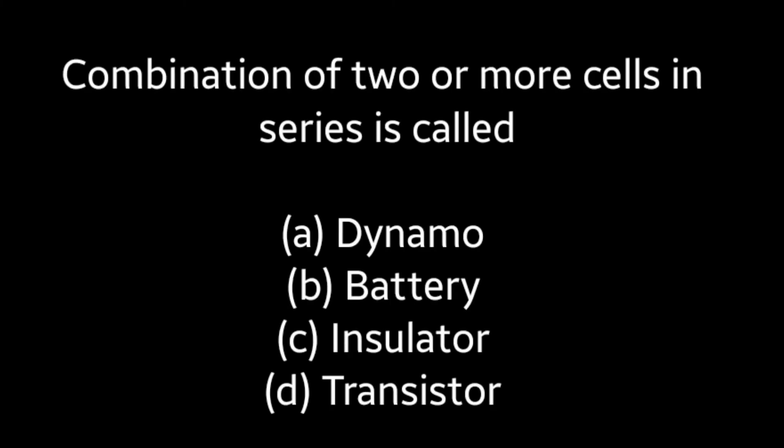Next question: Combination of two or more cells in series is called (A) Dynamo, (B) Battery, (C) Insulator, (D) Transistor. Answer is Option B: Battery.